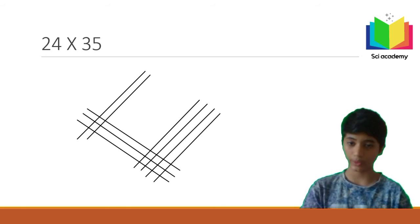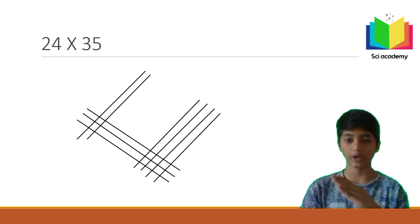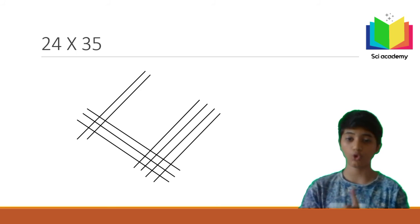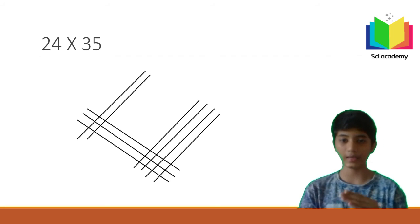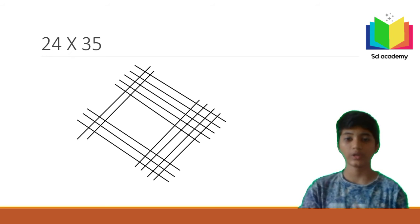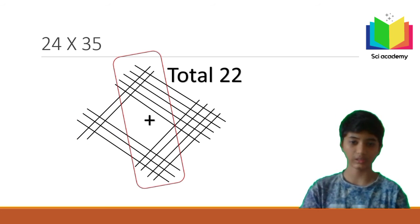For 35, draw lines in the opposite direction to the lines of 24. The first digit is 3, so draw three lines, then five lines parallel to those. Now in the first circle we get 6 intersections, in the middle circle 22 intersections, and in the last circle 20 intersections.